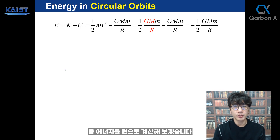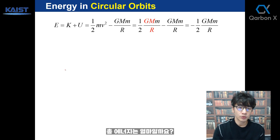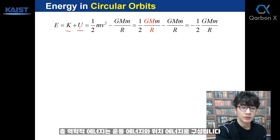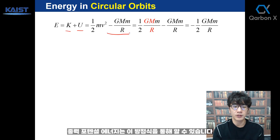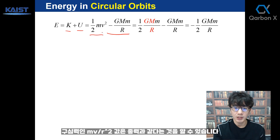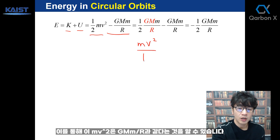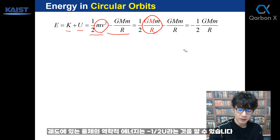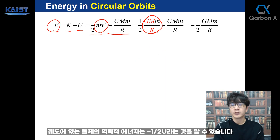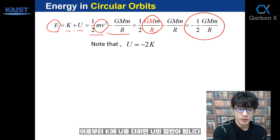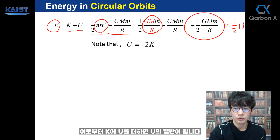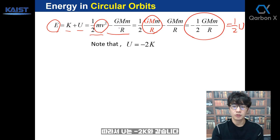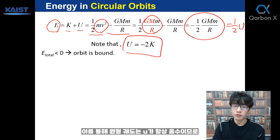Let's calculate the total energy in a circular orbit. Total mechanical energy consists of kinetic energy and potential energy. Gravitational potential energy is given by minus GMm over r. When the object moves in a circular path at constant speed, the centripetal force mv² over r equals gravitational force GMm over r². From that, mv² equals GMm over r. You can then find that the total mechanical energy of an object in a circular orbit is equal to minus one-half of the potential energy U, so that K plus U equals one-half U, meaning U equals minus 2K.